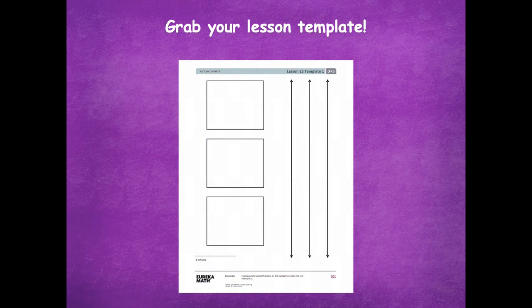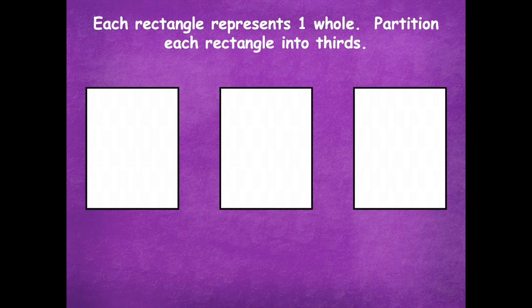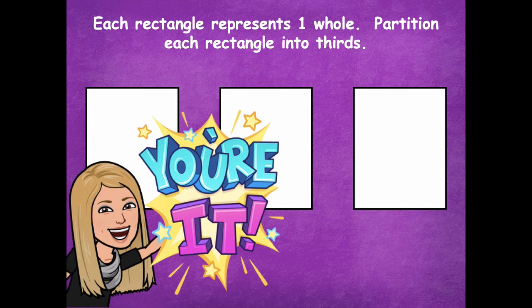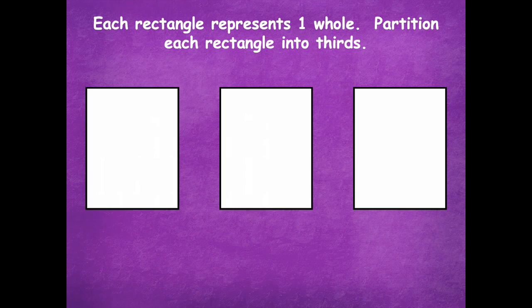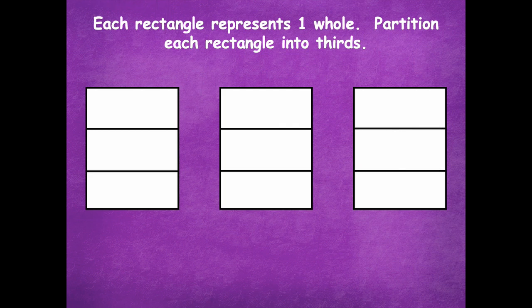Grab your lesson template first. So each rectangle represents one whole. Partition each rectangle into thirds. All three rectangles — you're going to pause the video, partition them into thirds, and then click play when you're ready for the next step. Here's my first one in thirds, my second in thirds, and my third rectangle in thirds. Remember, those are all still each representing one whole.